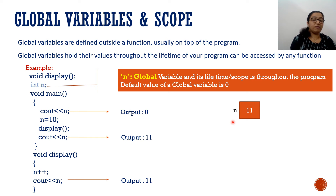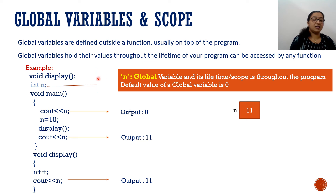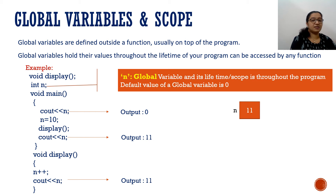To summarize: global variables are defined outside a function, on top of the program. Global variables hold their values throughout the lifetime of the program. Both main and display accessed the same global n throughout the program. Any function can access and change the value of a global variable, and those changes are visible to all other functions.